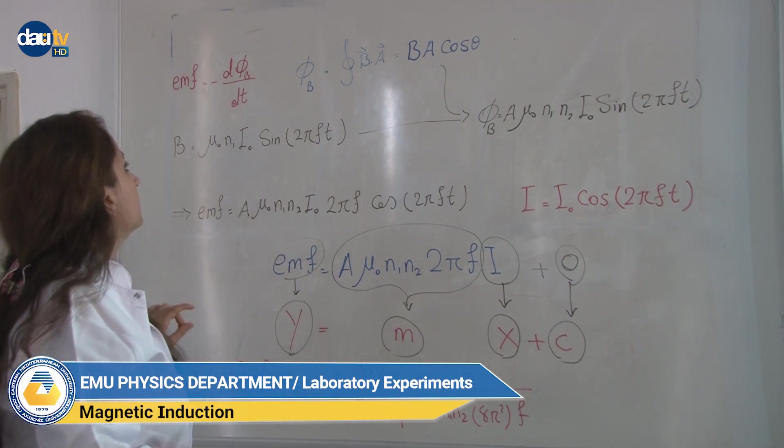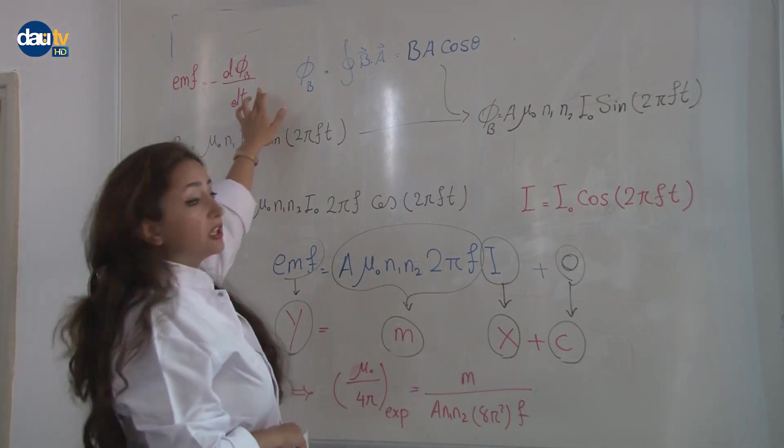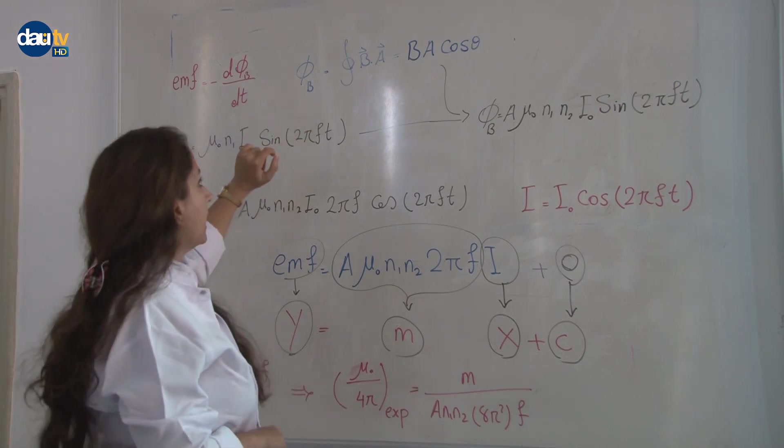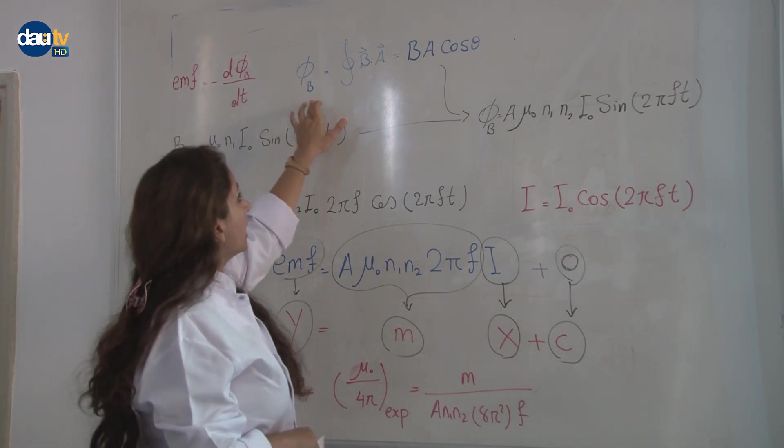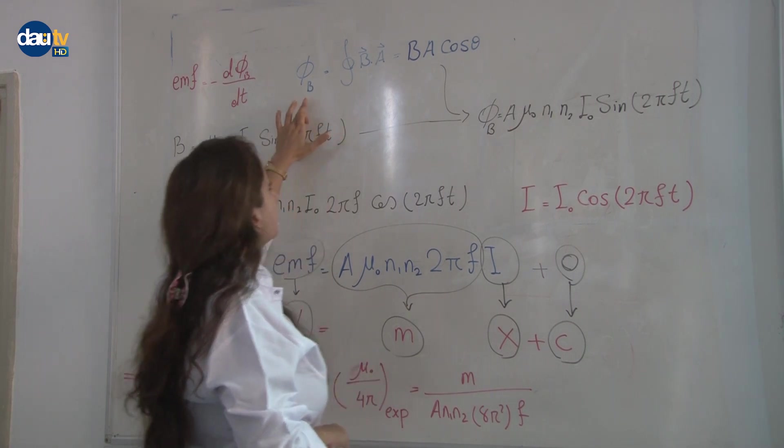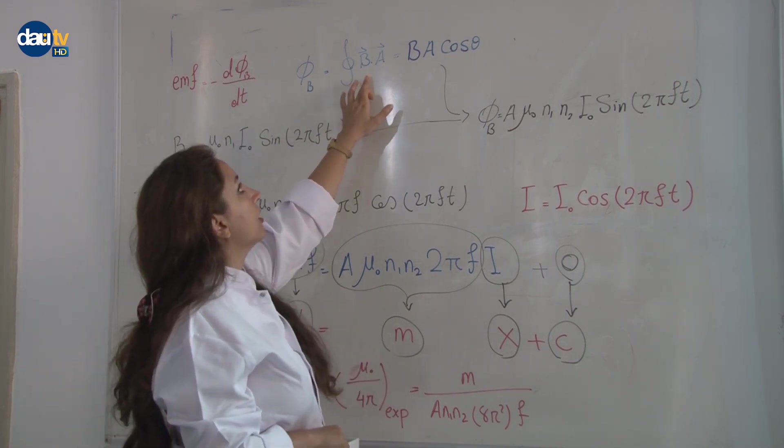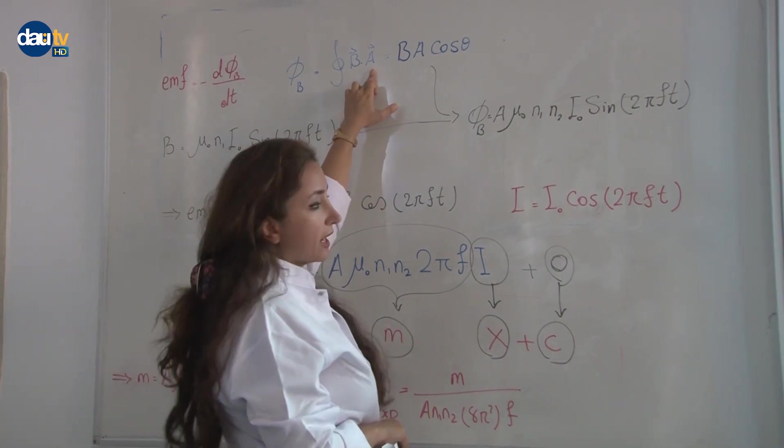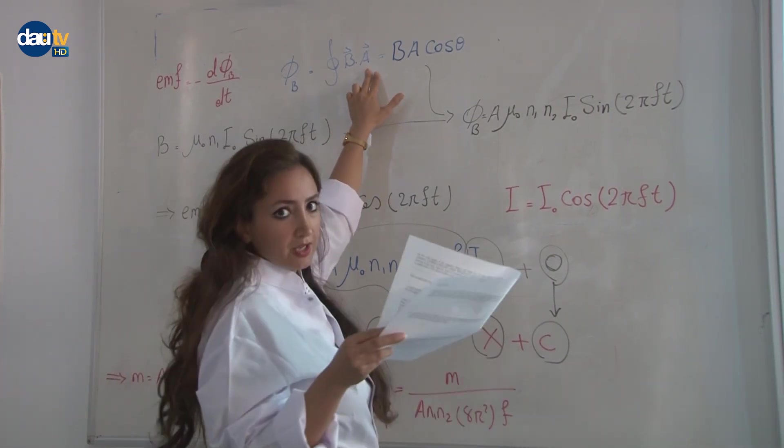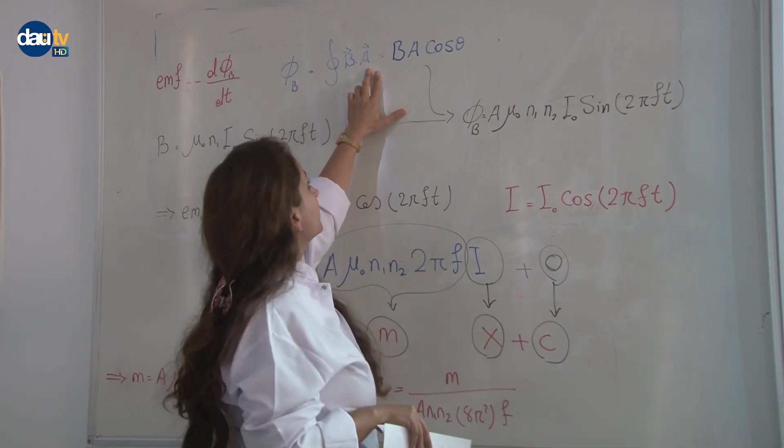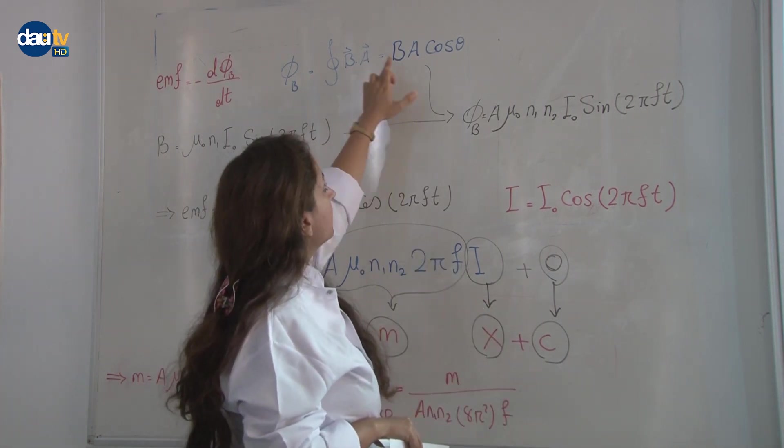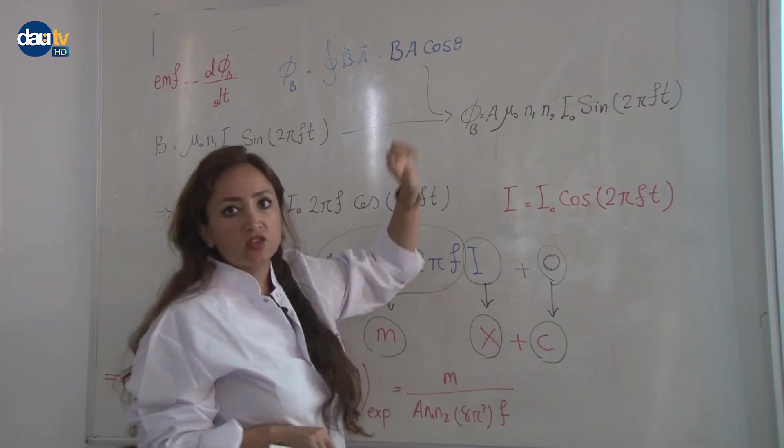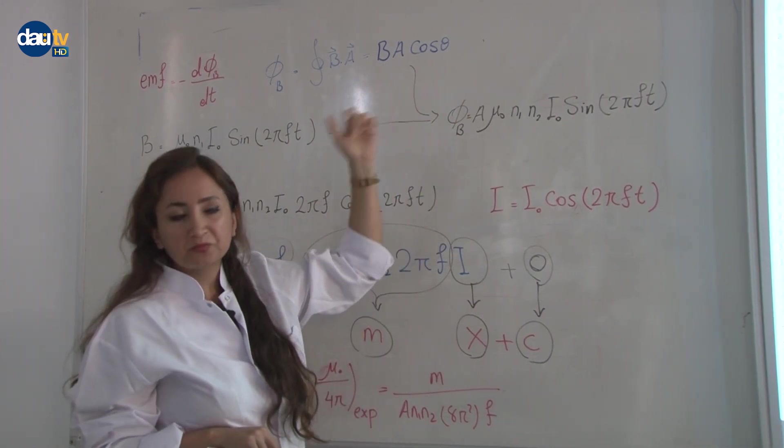Let me start with the equation for EMF, electromotive force, equal to minus d phi, which is the magnetic flux over dt. Let's define the magnetic flux as the integral of B, the magnetic field times A. It's B A cosine theta in scalar form.